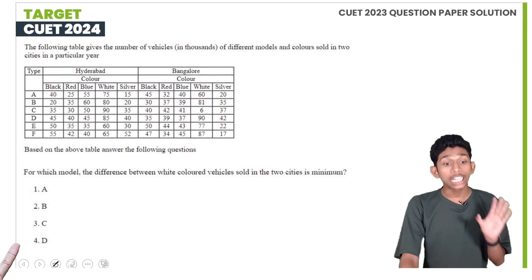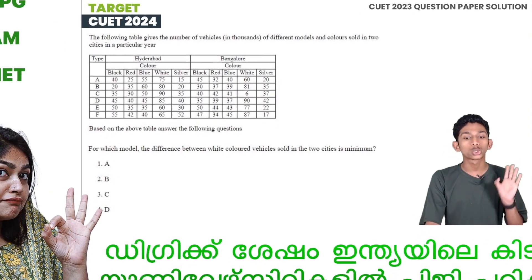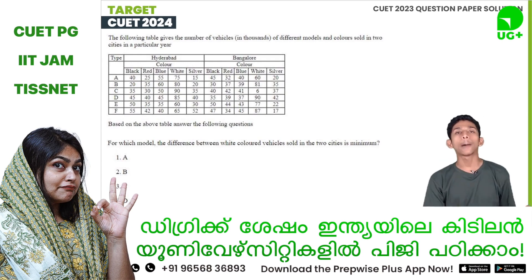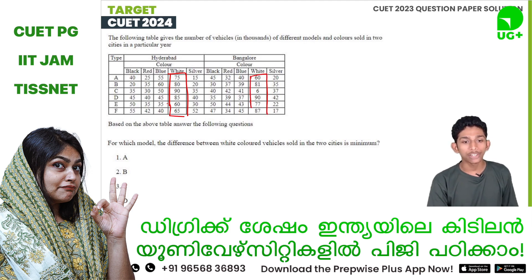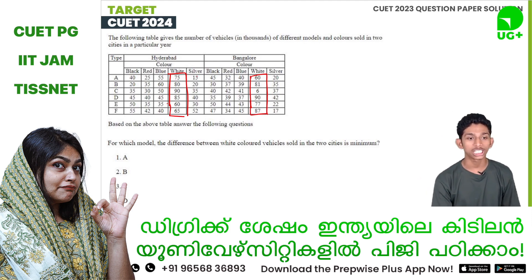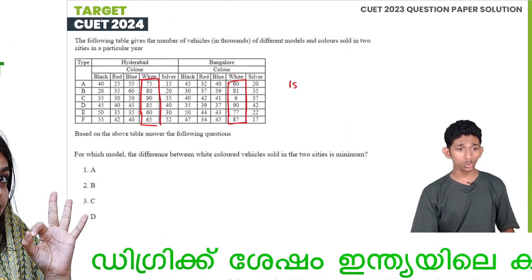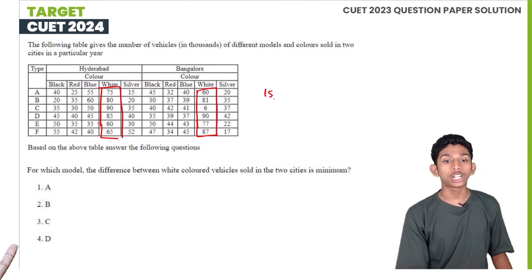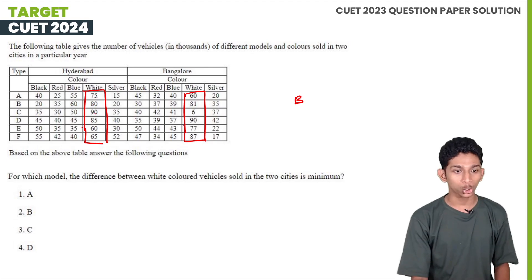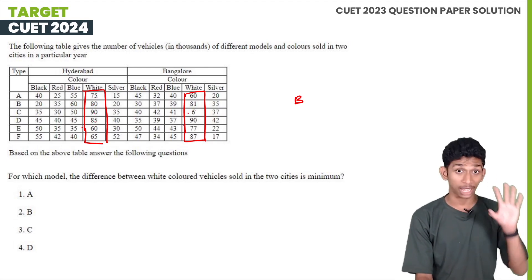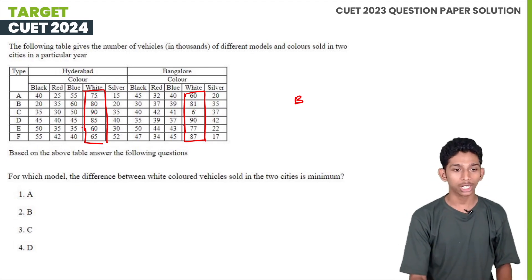For which model is the difference between white-colored vehicles sold in two cities the minimum? Looking at the differences: at some models it is minimum at around 10, and checking: 90 minus 60 is 30, 60 minus 70 is 10, 60 minus 80 is 20. The minimum difference is 10.